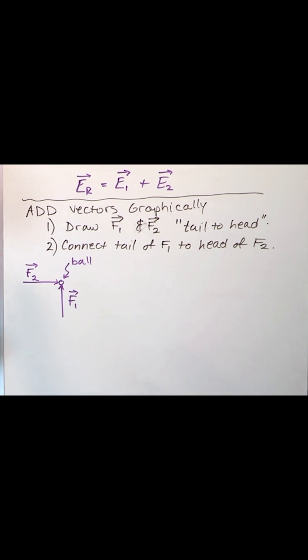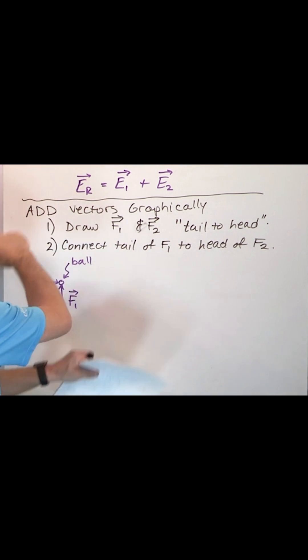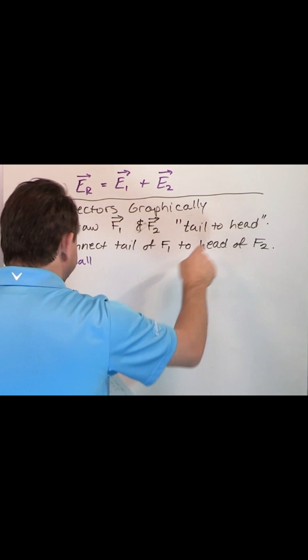Instead of thinking about that way, we're going to use our recipe. We're going to draw F1 and F2 tail to head. So I want to do that. I want to grab these and I want to arrange them tail to head.